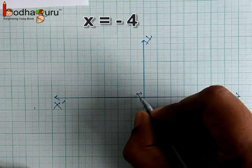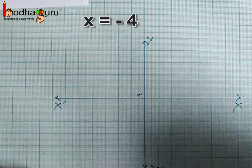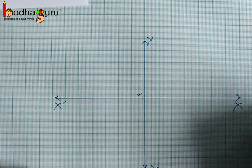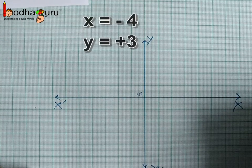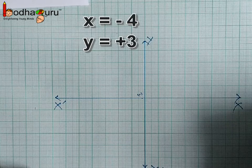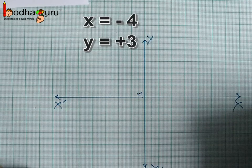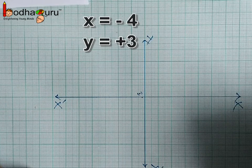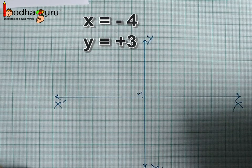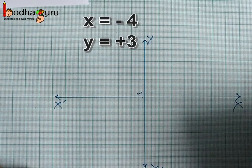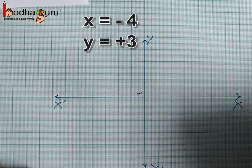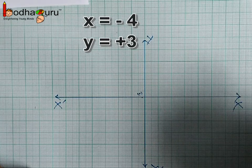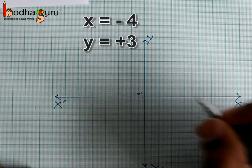Now let us find the y value. This point is 3 units from the x-axis and it is above the x-axis, so y equals plus 3. Remember: any point above the x-axis has a positive y value, and any point below the x-axis has a negative y value. So this point is (−4, 3) and it lies in quadrant 2.